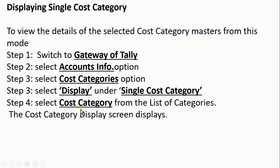To display a single cost category, go to Gateway of Tally, select Accounts Info, select Cost Category option, then select Display under single cost category, and select the cost category from the list of categories. The cost category display screen will be shown.